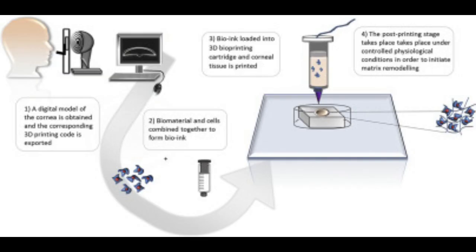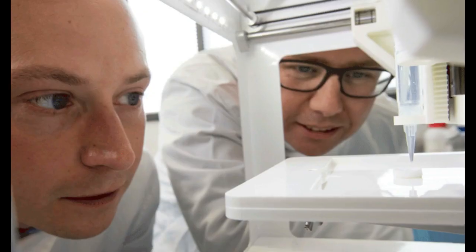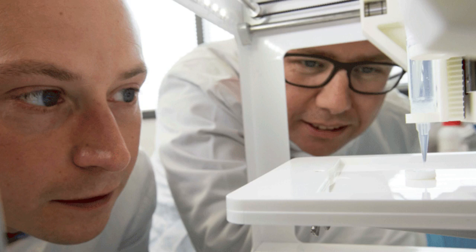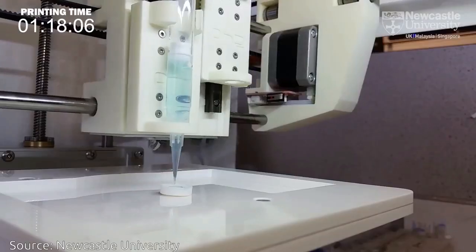The proof-of-concept research reports how stem cells from a healthy donor cornea were mixed together with alginate and collagen to create a solution that could be printed, a bio-ink. The combination of alginate and collagen keeps the stem cells alive while producing a material which is stiff enough to hold its shape but soft enough to be squeezed out the nozzle of a 3D printer.